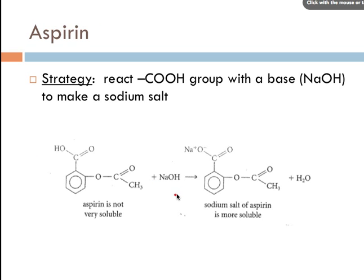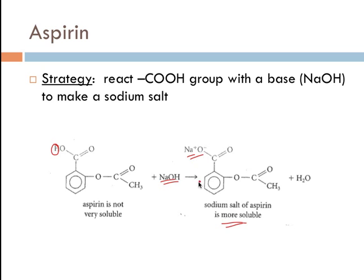Aspirin is not very soluble in the body, but if we take its carboxyl group and react the acidic hydrogen with a base such as sodium hydroxide, we form the sodium salt of aspirin. This ionic group makes it a salt — an ionic compound — which increases its solubility and should deliver more of the drug to the target area of the body.